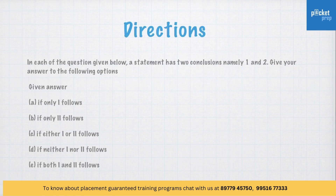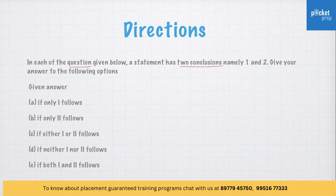Here are the directions for the questions. In each question given below, a statement has two conclusions, namely one and two. Give your answer using the following options: if only conclusion one follows, if only two follows, if either one or two follows, if neither one nor two follows, or if both one and two follow.